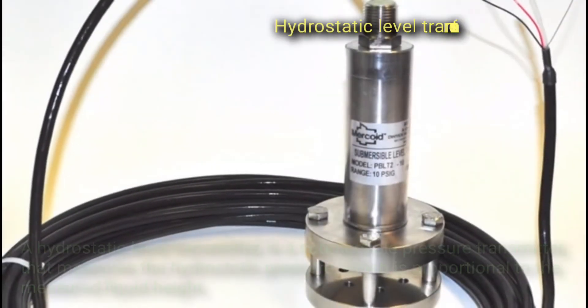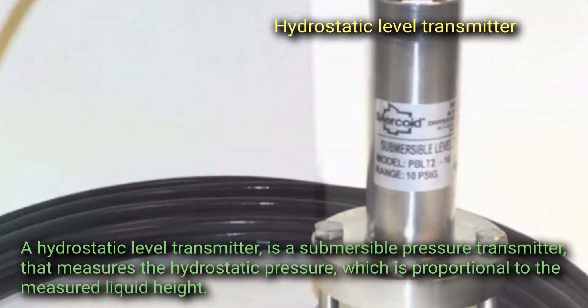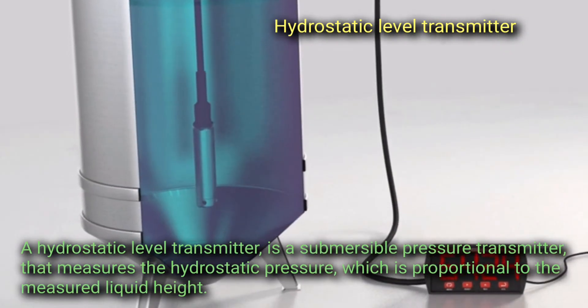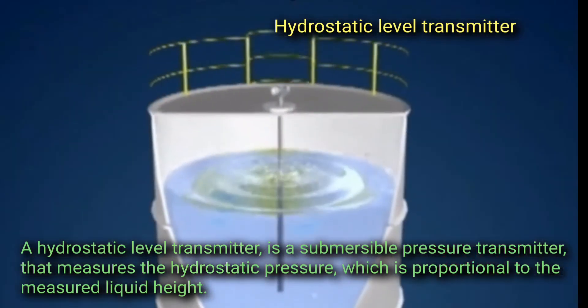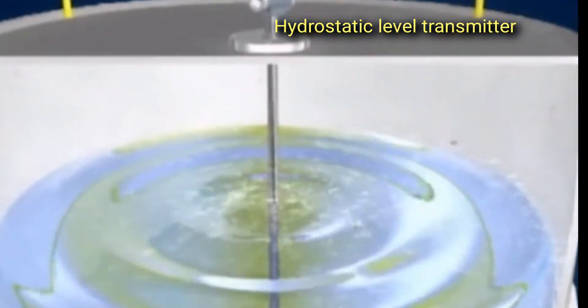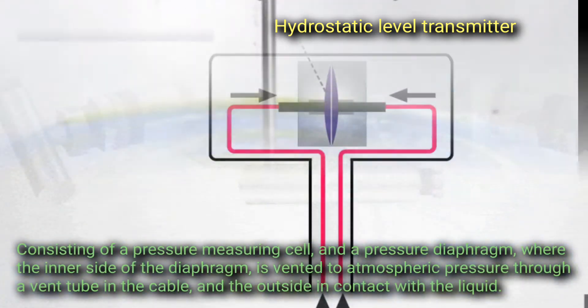Hydrostatic Level Transmitter. A Hydrostatic Level Transmitter is a submersible pressure transmitter that measures the hydrostatic pressure which is proportional to the measured liquid height, consisting of a pressure measuring cell and a pressure diaphragm.